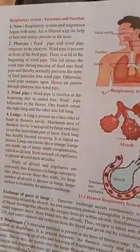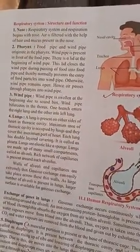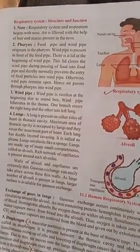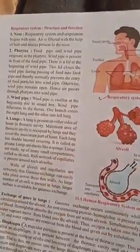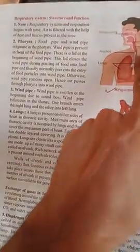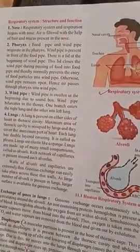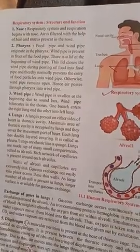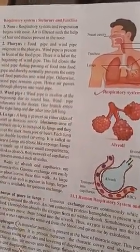We begin with the nose. Air is filtered with the help of hair and mucus present in the nose. Small hair-like structures in the nose help us take in air and release carbon dioxide. The pharynx is where both the food pipe and windpipe originate.